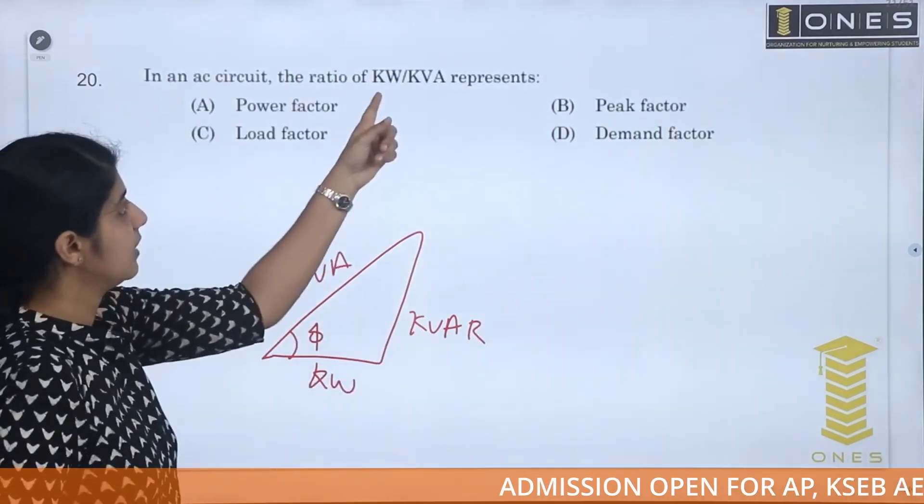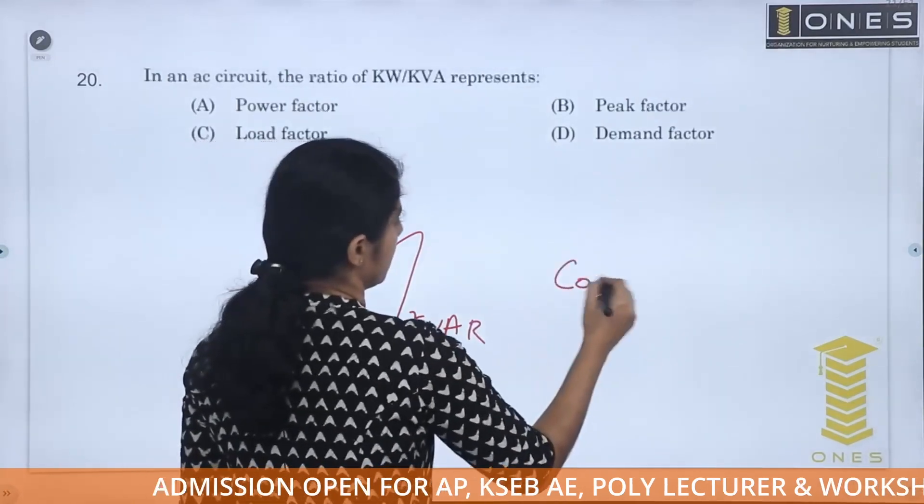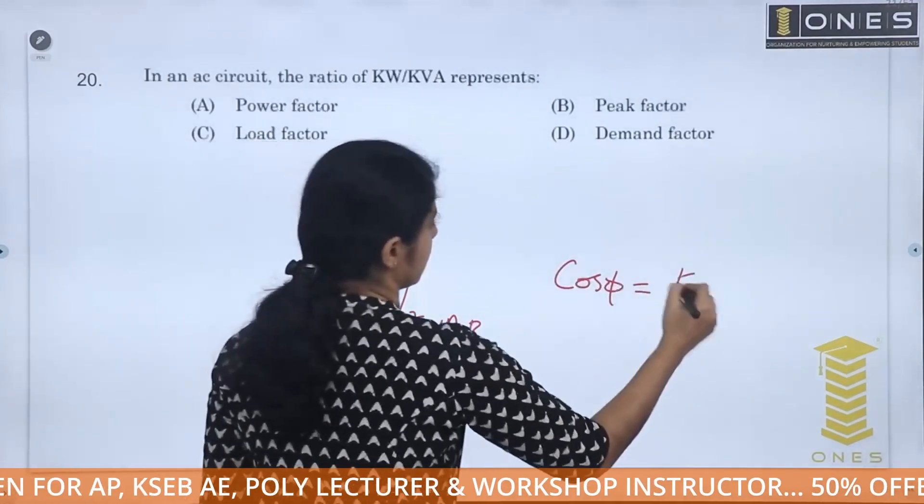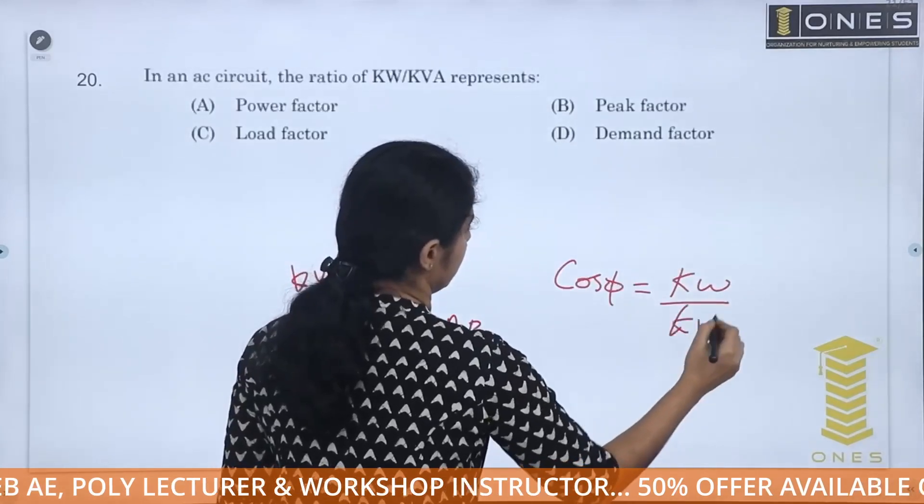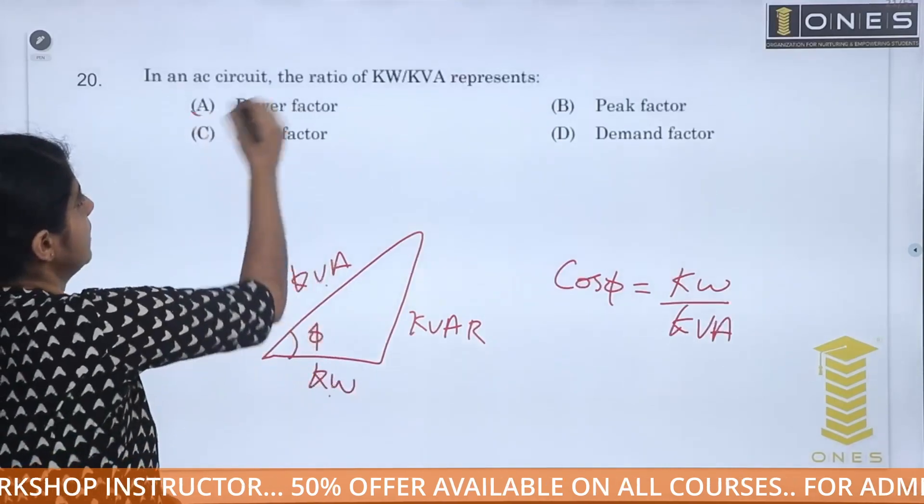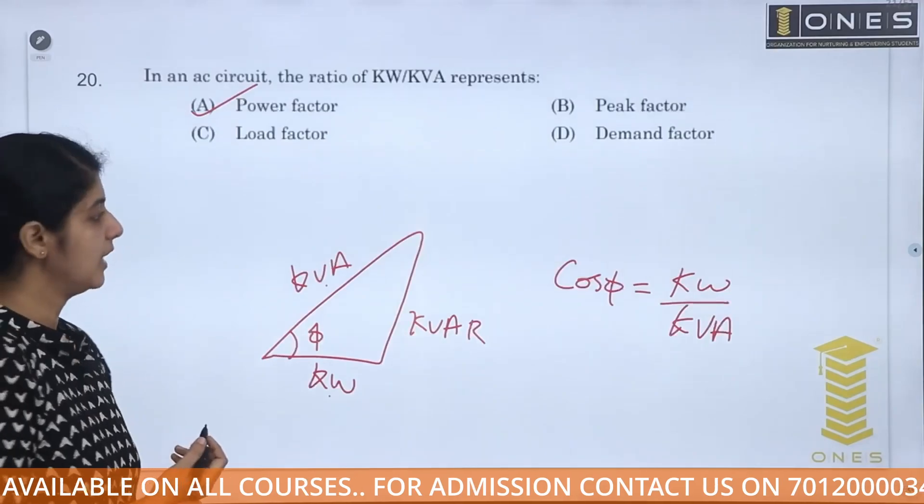You can see what is kW by kVA. Cos phi is equal to kW divided by kVA. What is kW divided by kVA? That is power factor. This is the answer. Cos phi is equal to power factor, kW divided by kVA.